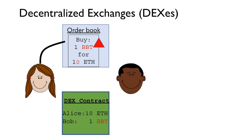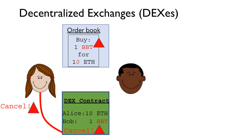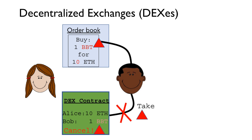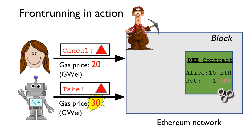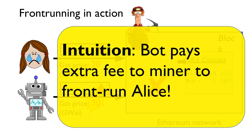Consider the scenario where Alice makes a typo and accidentally offers 10 ETH for her Bob's Bubble token — way too high of a price. Normally, you would expect Alice to notice this mistake and immediately go to the DEX contract asking to cancel the transaction. But what if instead of another user, Bob was a bot? Bob could immediately notice Alice's typo and offer to pay more money in transaction fees than she does for her cancellation, which must be posted to the blockchain to impact the DEX contract. By offering to pay more transaction fees than Alice, Bob gets his transaction in first and manages to scoop up Alice's typo before she can correct it with a cancellation, profiting off of Alice's mistake.